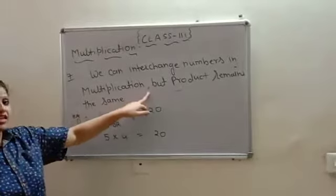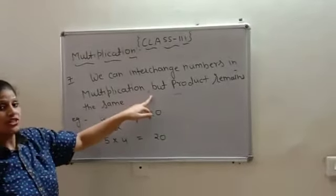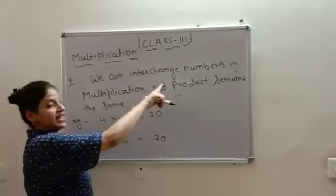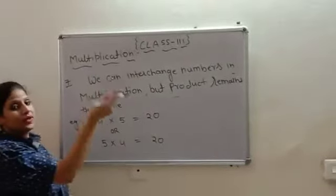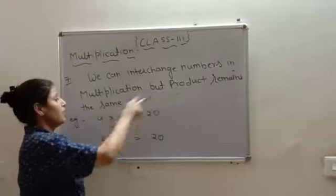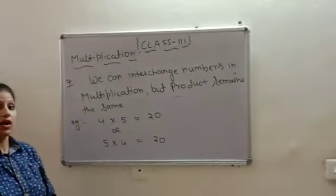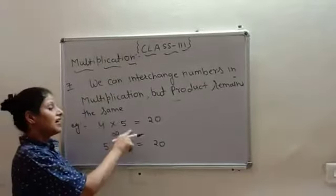Now, last rule is, when we interchange numbers in multiplication or you can say we can interchange numbers in multiplication but product remains the same. Now, what does it mean? 4 fives are 20.